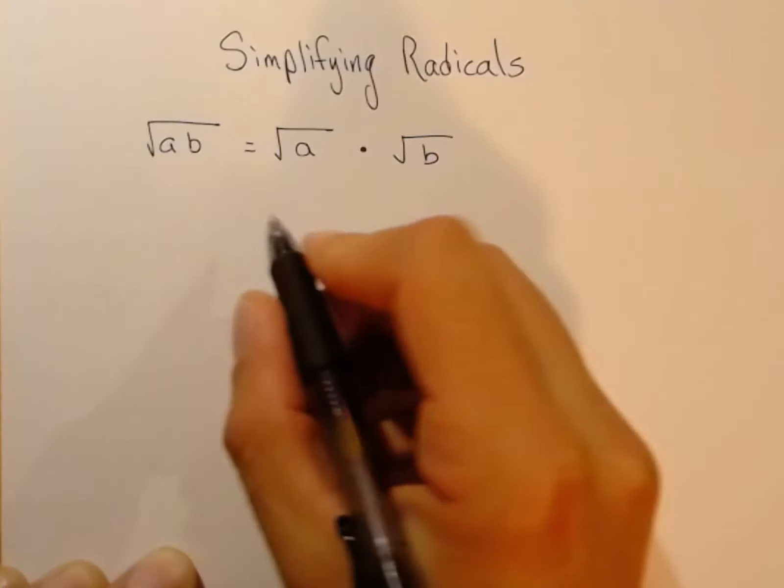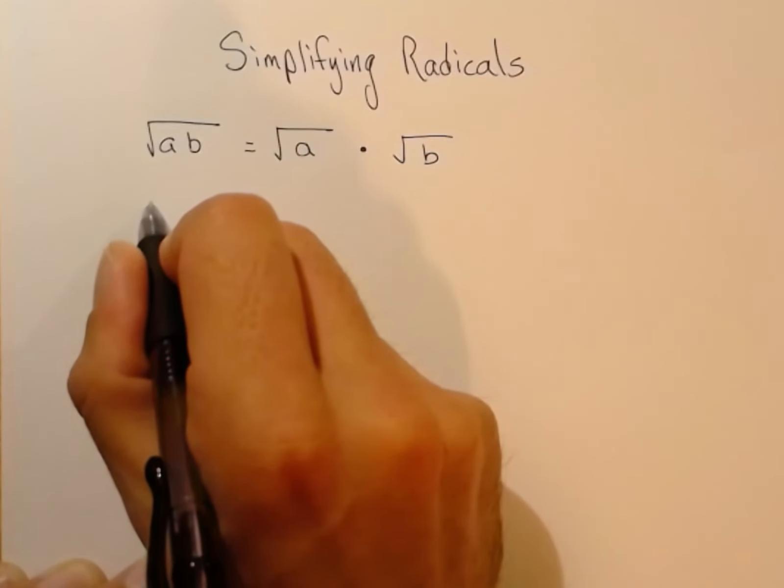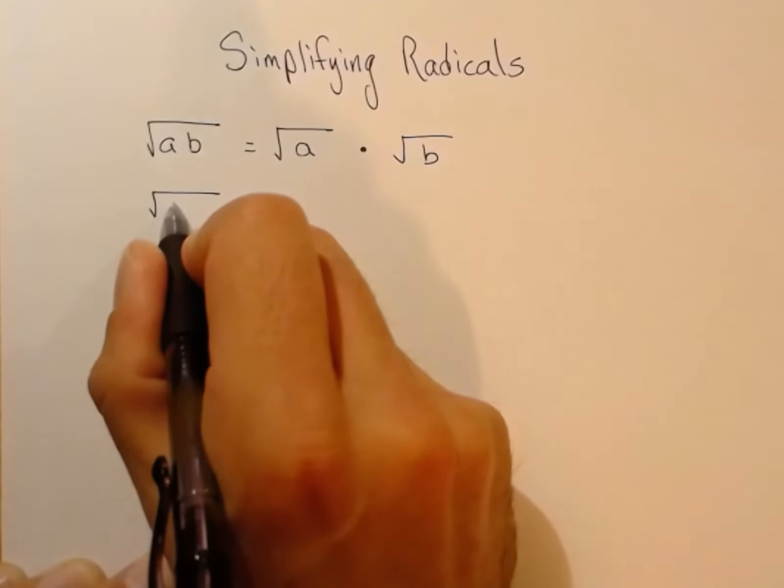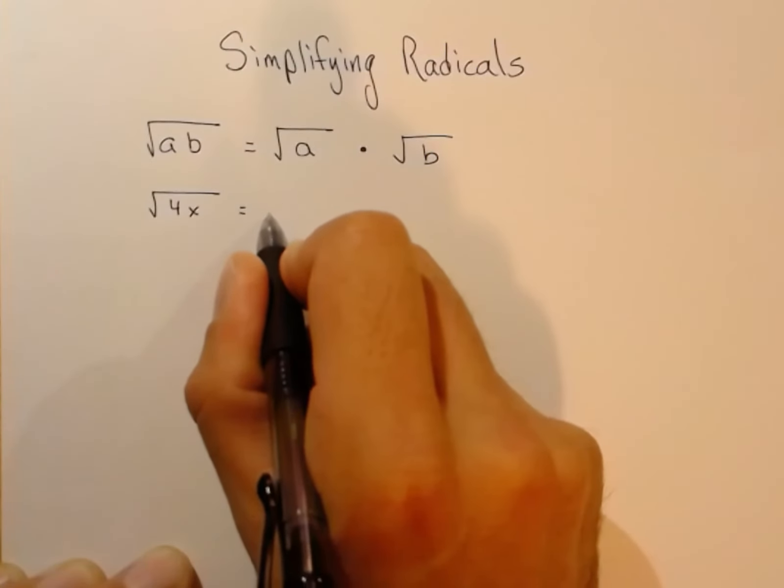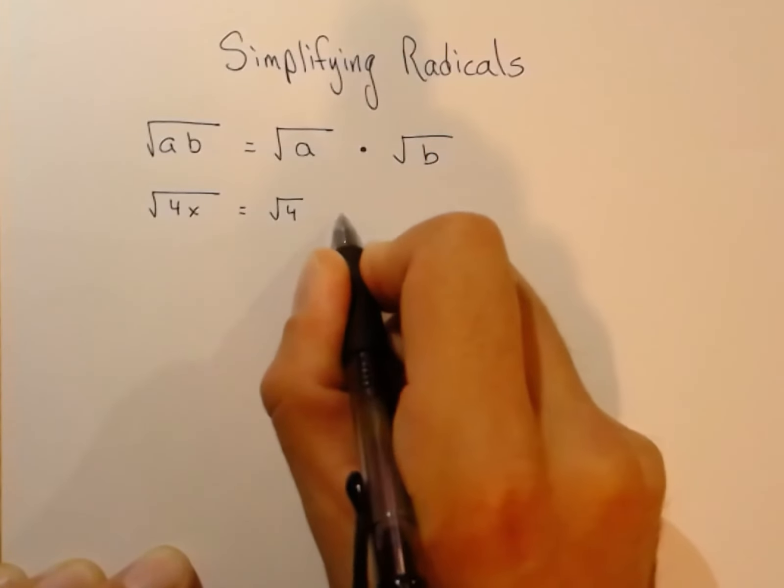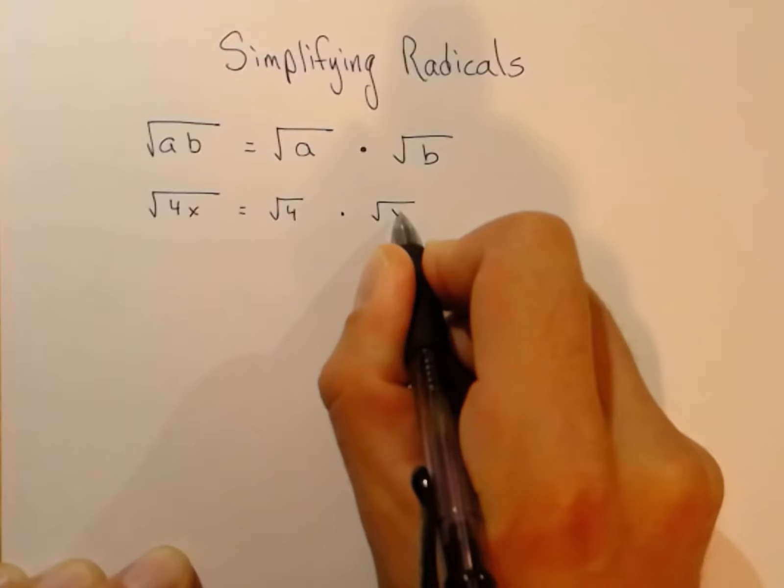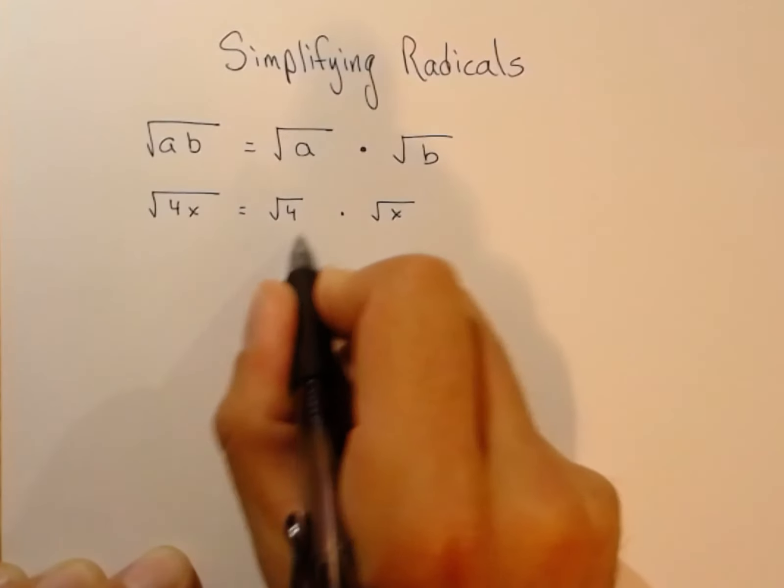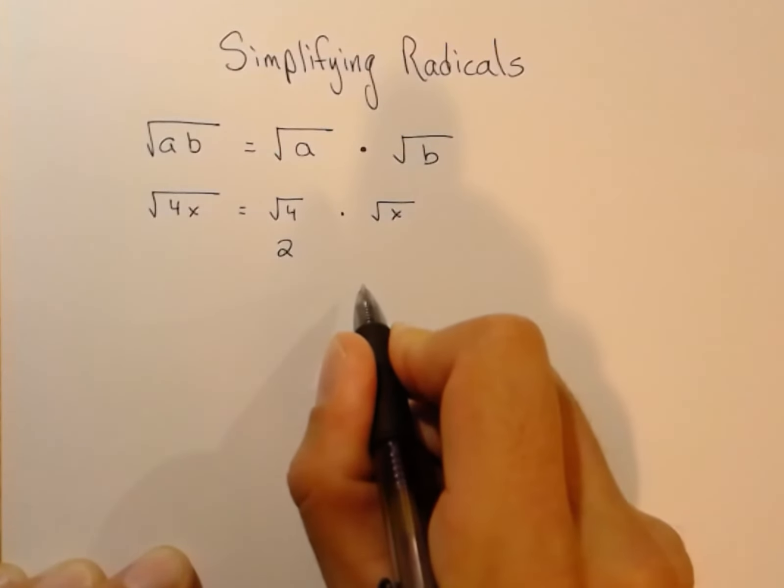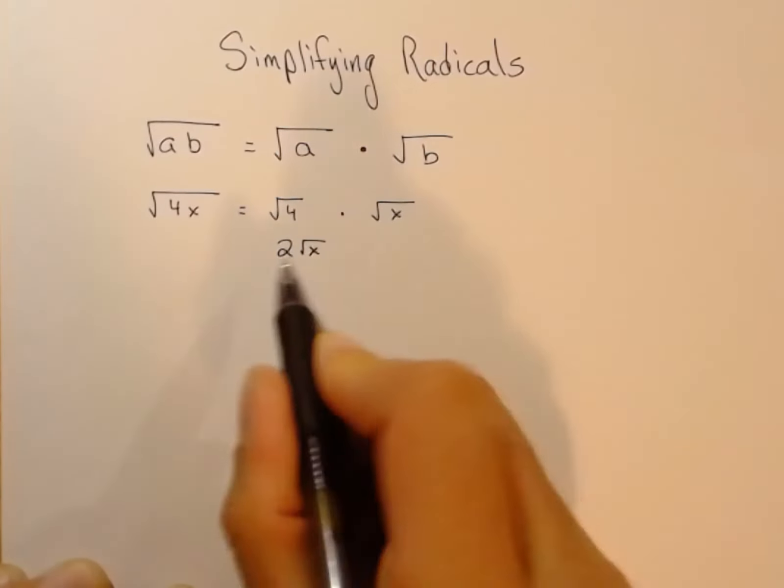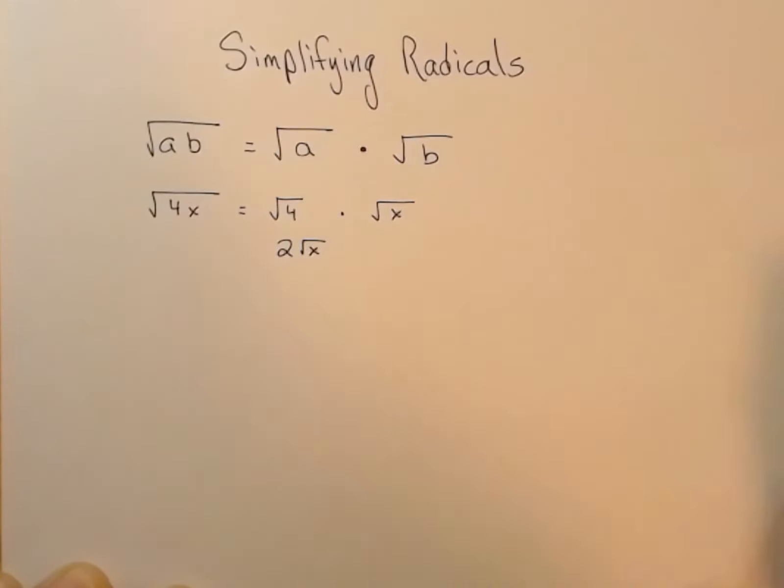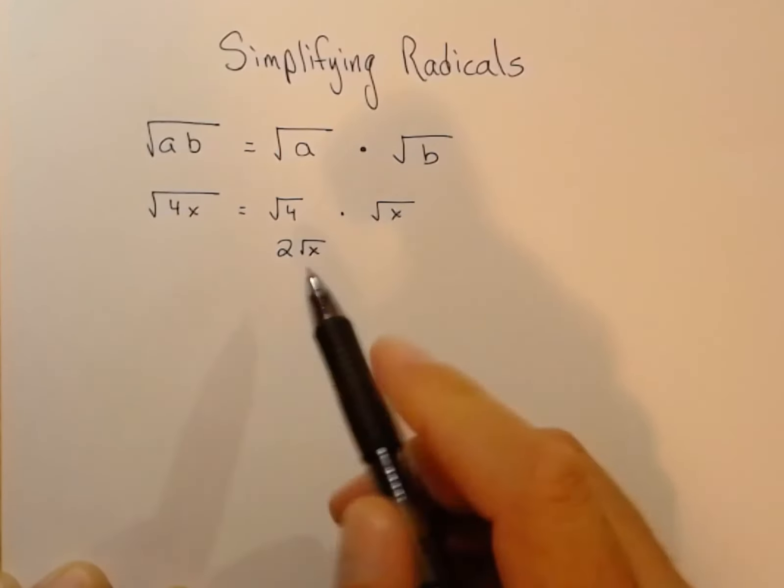Just as a quick example, if I saw the square root of 4x, I could break this up into the square root of 4 times the square root of x. The square root of 4 is 2 times the root of x. It can be written with the number in front of the radical.